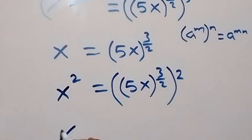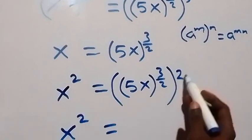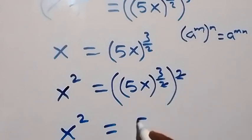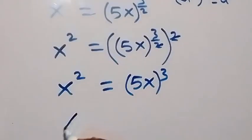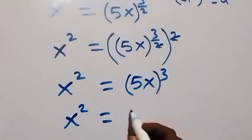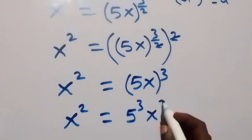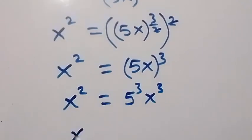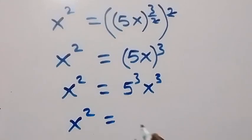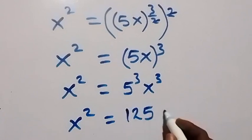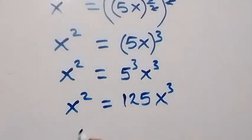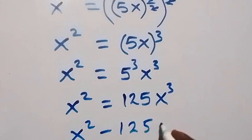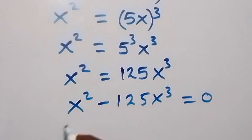Then from here we have x squared equals — the powers multiply on the right: 3 over 2 times 2, the 2s cancel out, and we have 5x raised to power 3. Then this is the same as x squared equals — this power of 3 affects 5, so we have 5 raised to power 3, and also x raised to power 3.